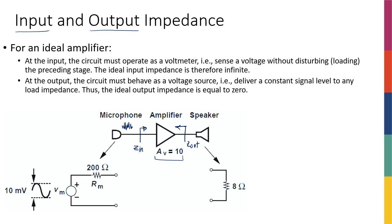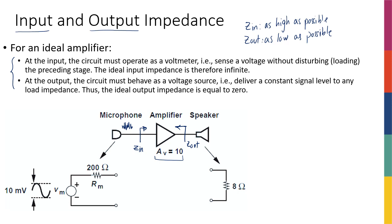It turns out that I want Z_in to be as high as possible — ideally infinity — and Z_out to be as low as possible — ideally zero ohms. We're going to look at the intuitive and analytical reasons for this using the microphone-amplifier-speaker example.